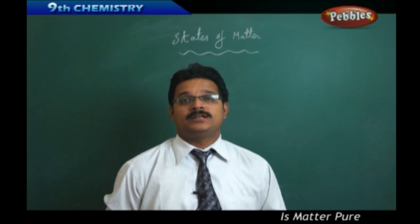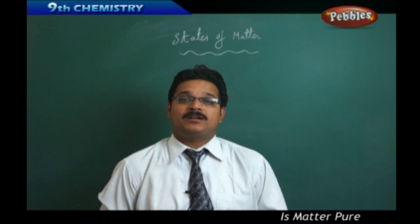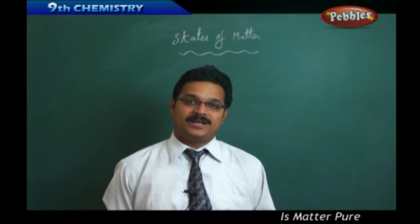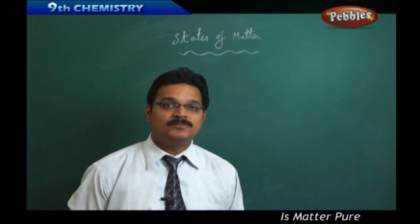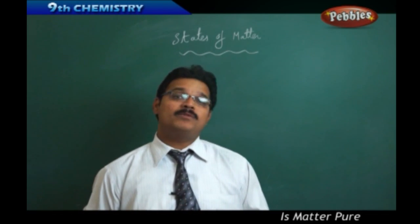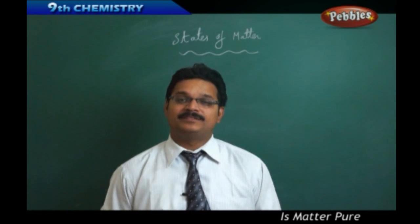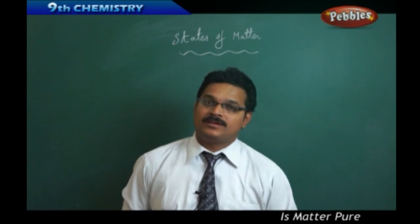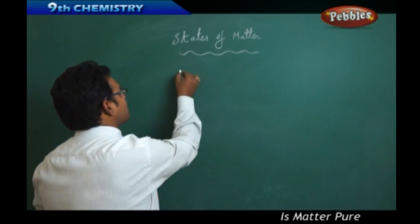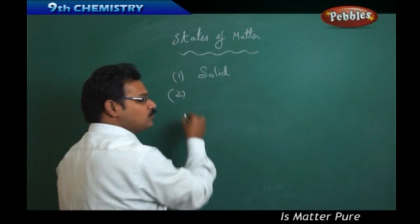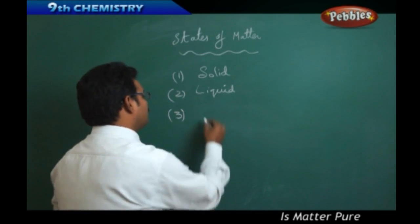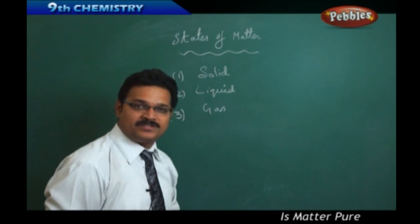We also know that matter comes with different shapes, sizes, properties, colours, and textures. So how many types of states does matter have? We call these the states of matter. Generally, we say we have three states of matter: number one, solid state; number two, liquid state; number three, gaseous state.